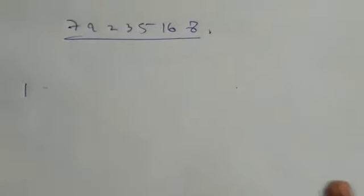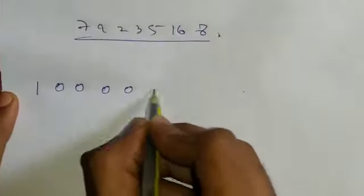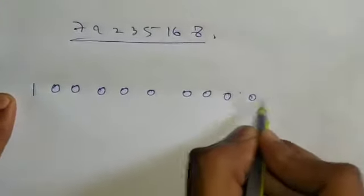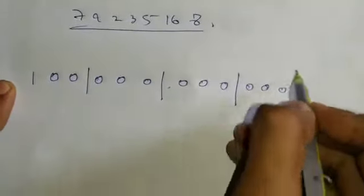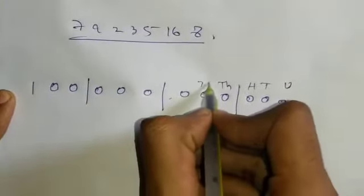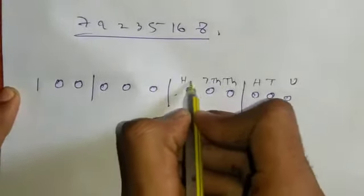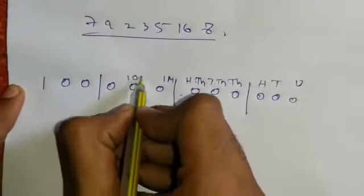Group the number using international number system. Like if the number is like this, group like this. You know this is ten, hundred, thousand, ten thousand, hundred thousand, one million, ten million, hundred million, this is billion, ten billion, and a hundred billion.